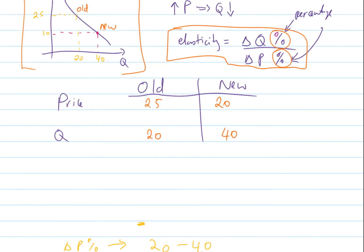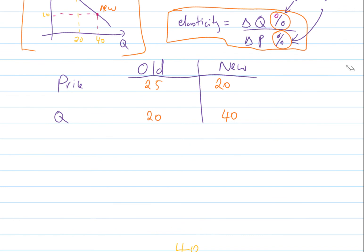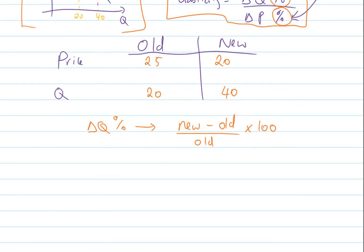First, let's look at the change in Q percentage-wise. To get the percentage change, use this formula: new take away old, divided by old, multiplied by 100. In our case, 40 take away 20, divided by 20, times 100, gives us 100 percent.